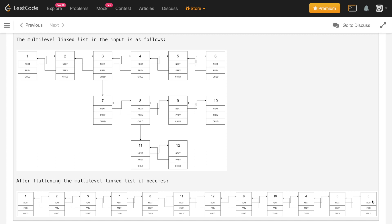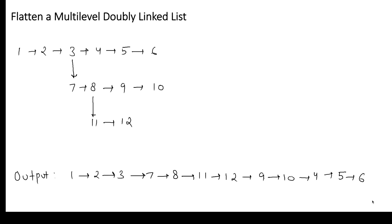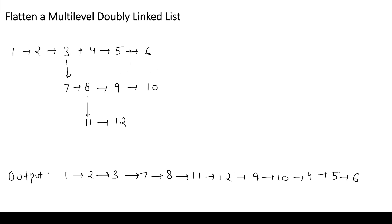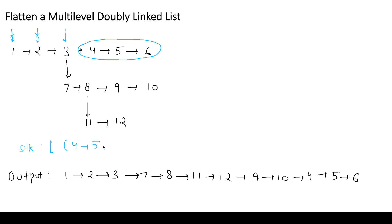Now let's see how to solve this problem. We have the input and we have to convert it to the output. We maintain a pointer initially at the head and check whether the current node has a child node or not. If it doesn't, we simply move to the next node. When the current node has a child, we push the current node's next into a stack — so we push four, five, and six.